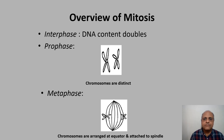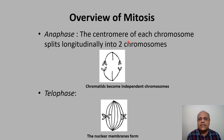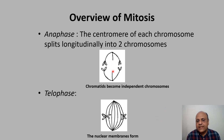Overview of mitosis: in interphase the DNA content doubles. In prophase the chromosomes are distinct. In metaphase the chromosomes are arranged at the equator and attached to the spindle. In anaphase the centromere of each chromosome splits, giving a longitudinal split into two chromosomes. In telophase the nuclear membranes form, so each daughter cell has an identical number of chromosomes as the parent.